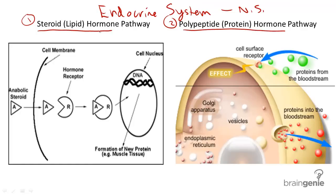Steroid hormones — for example, estrogen — will help with certain functions in the body. Estrogen in particular helps with reproduction.